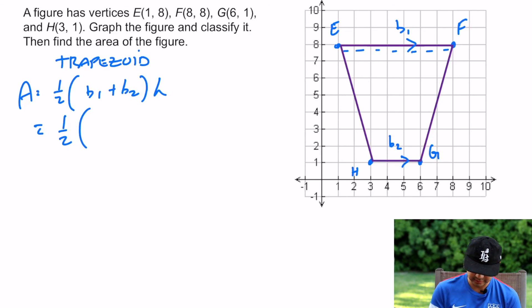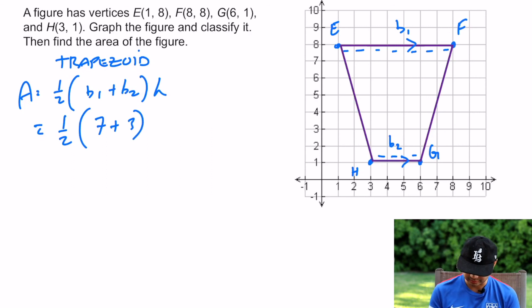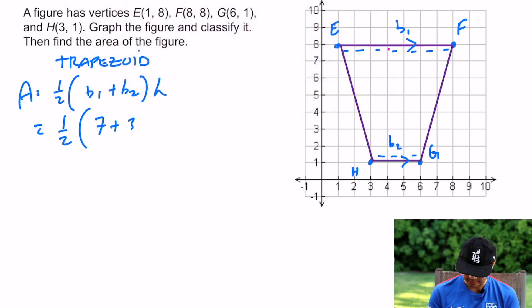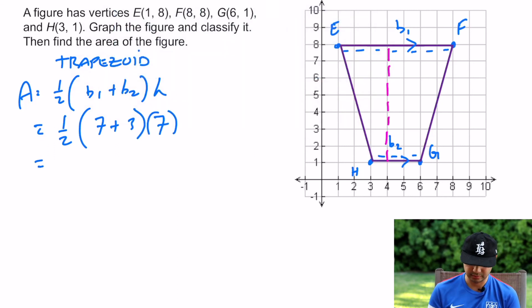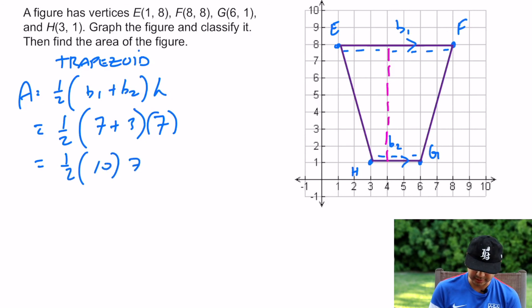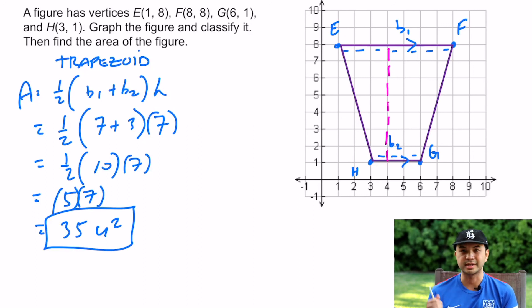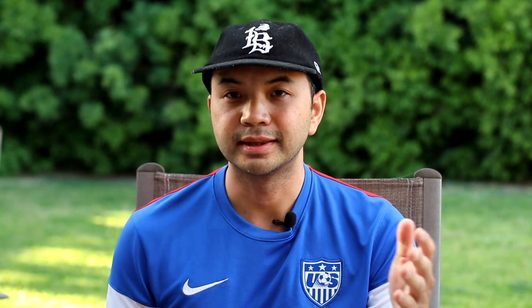Base 1 counts out to 7, base 2 counts to 3. Be careful measuring height — it must be perpendicular to the base, so count straight down from the correct point: the height is 7. Following order of operations: add inside the parentheses first, then multiply. The area works out to 35 square units. You could count all the little squares and also get 35.